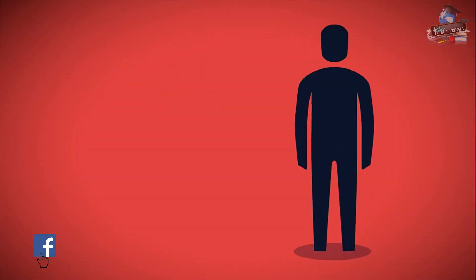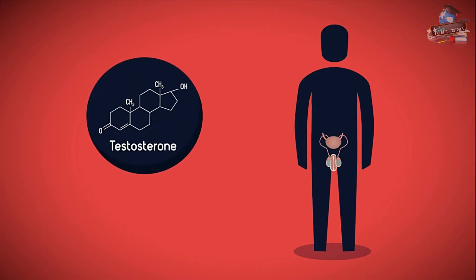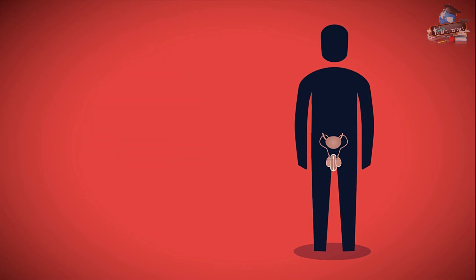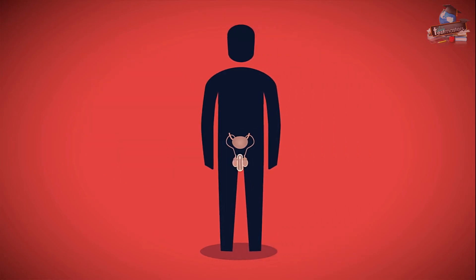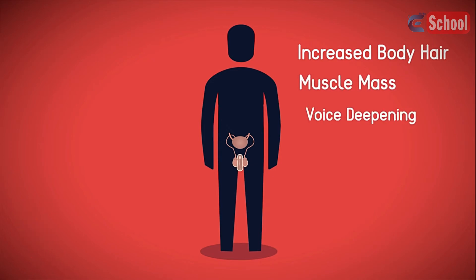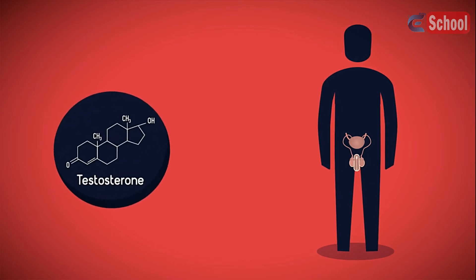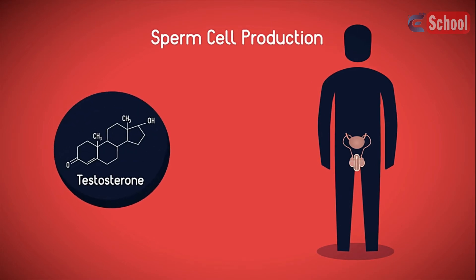In males, your testes secrete a hormone called testosterone, also known as the male hormone. Testosterone stimulates a wide variety of physiological changes including increased body hair, especially on your face and in your armpits, more muscle mass, and your voice deepening. Testosterone also stimulates sperm cell production in your testes.